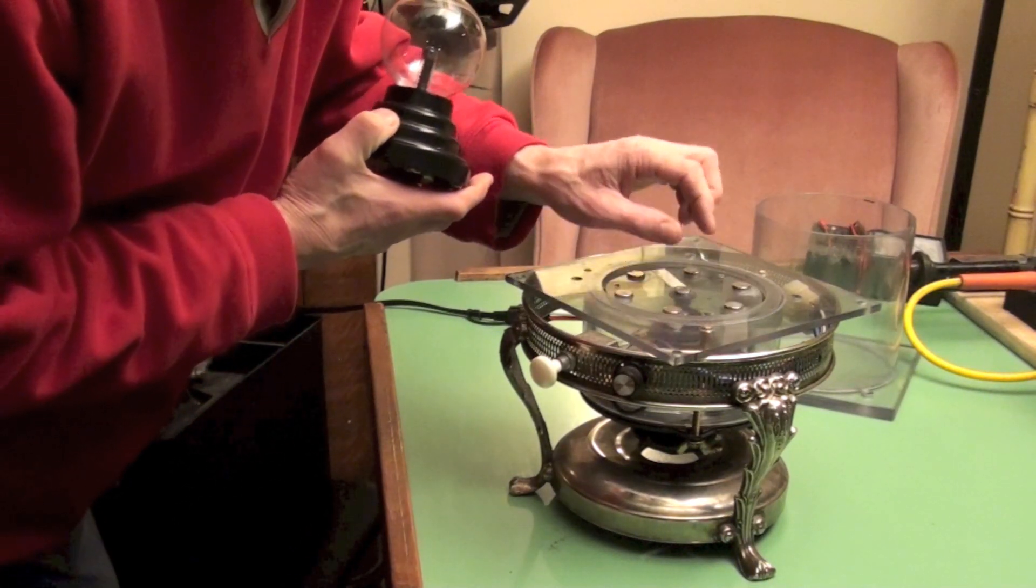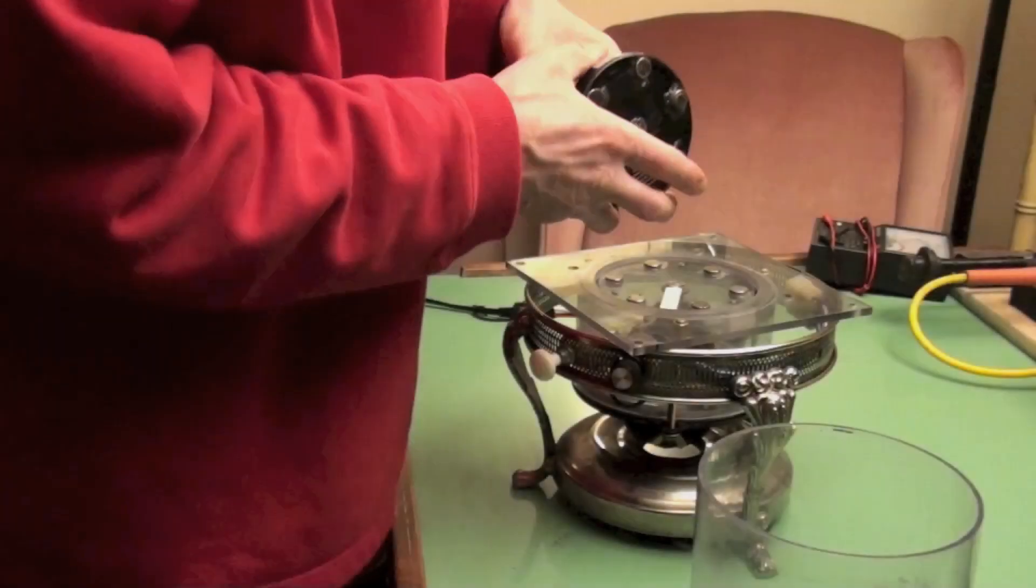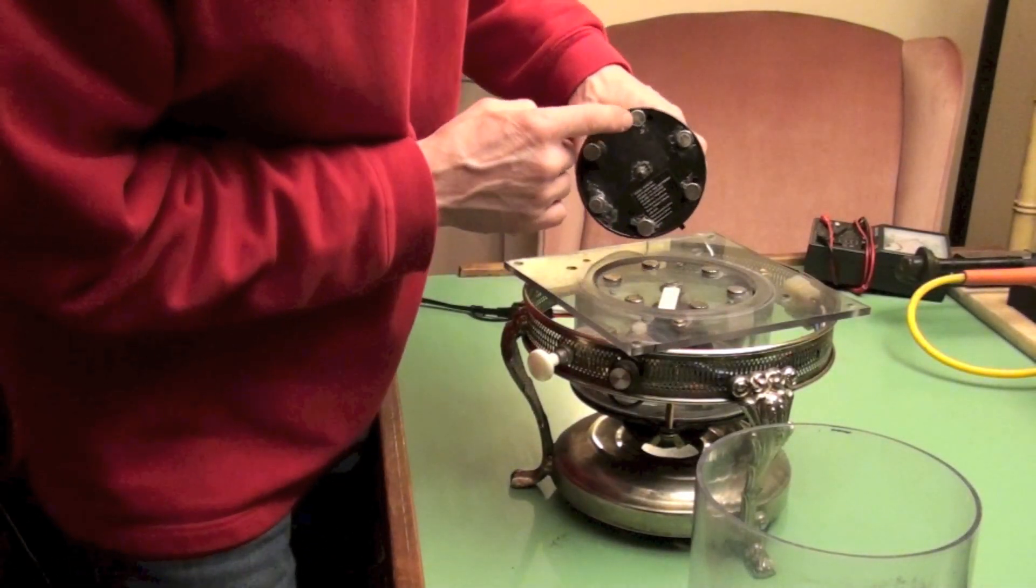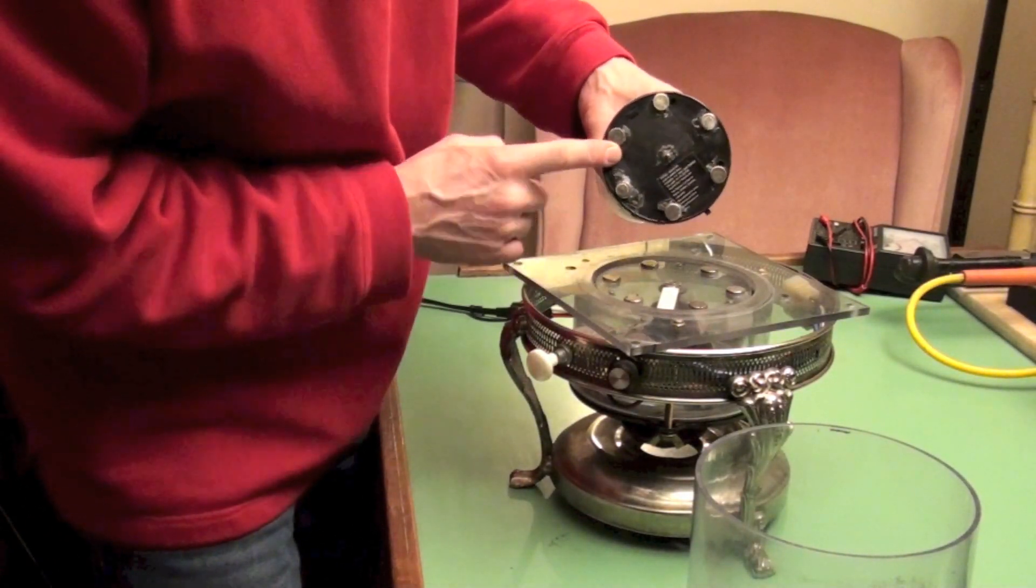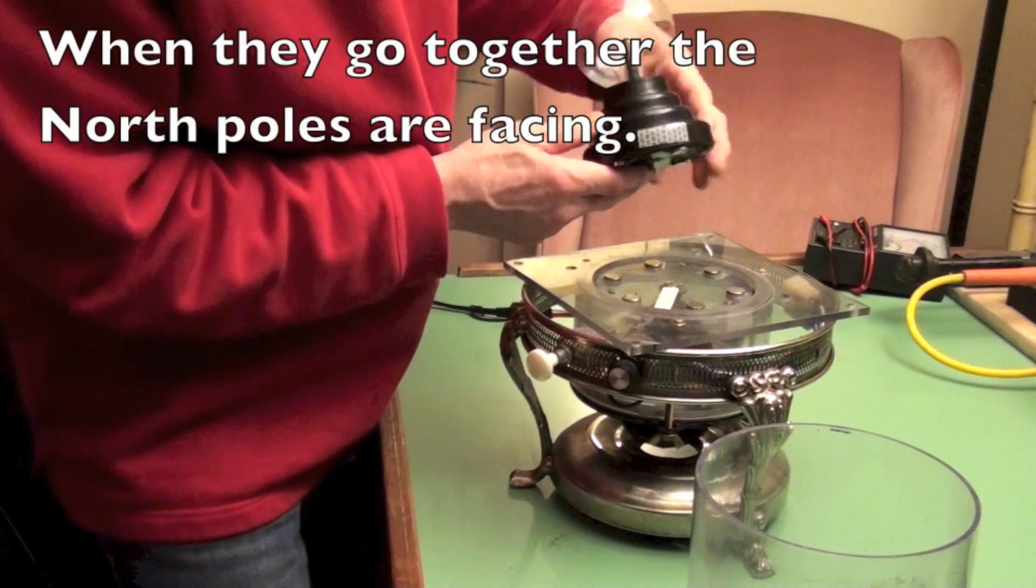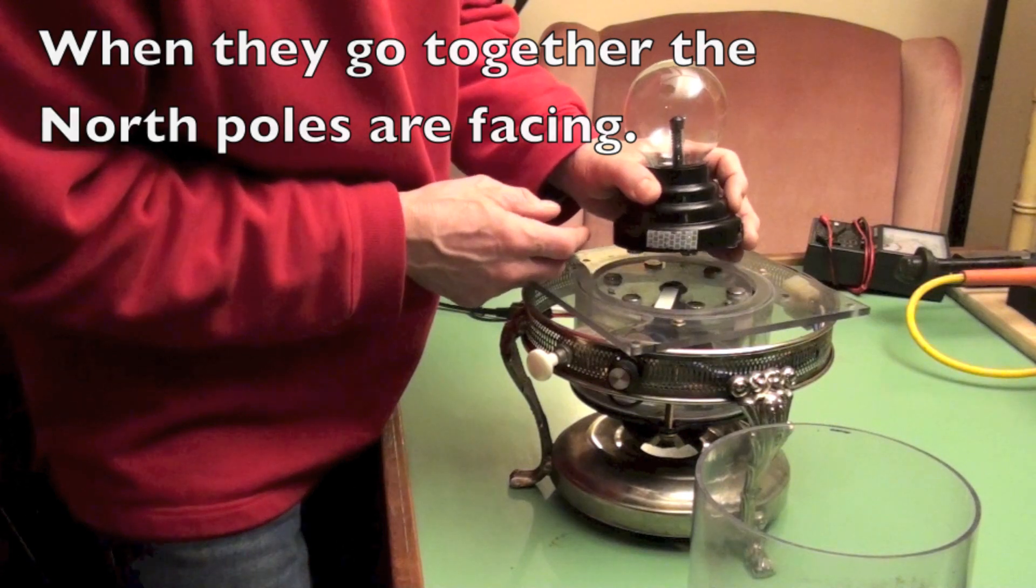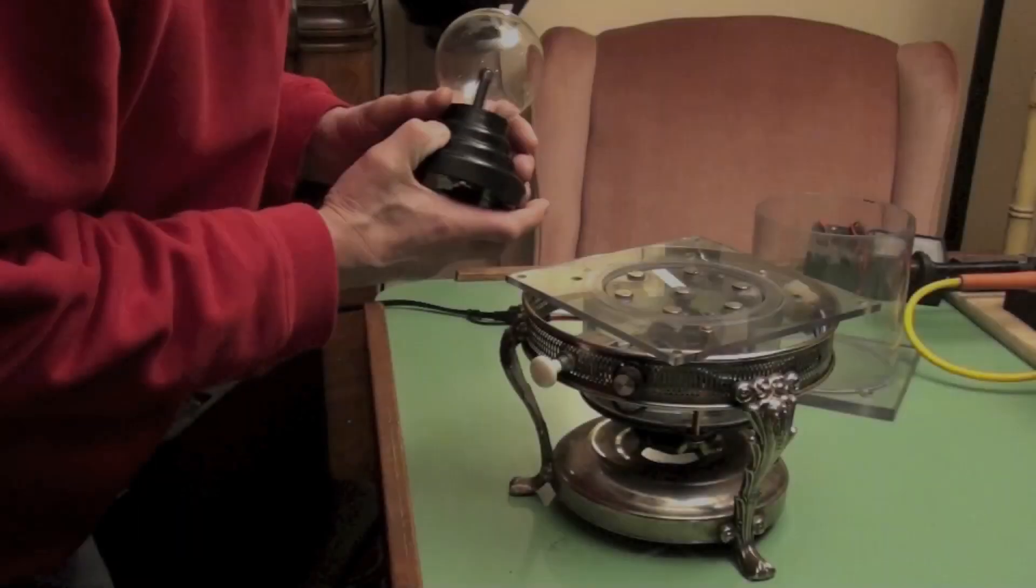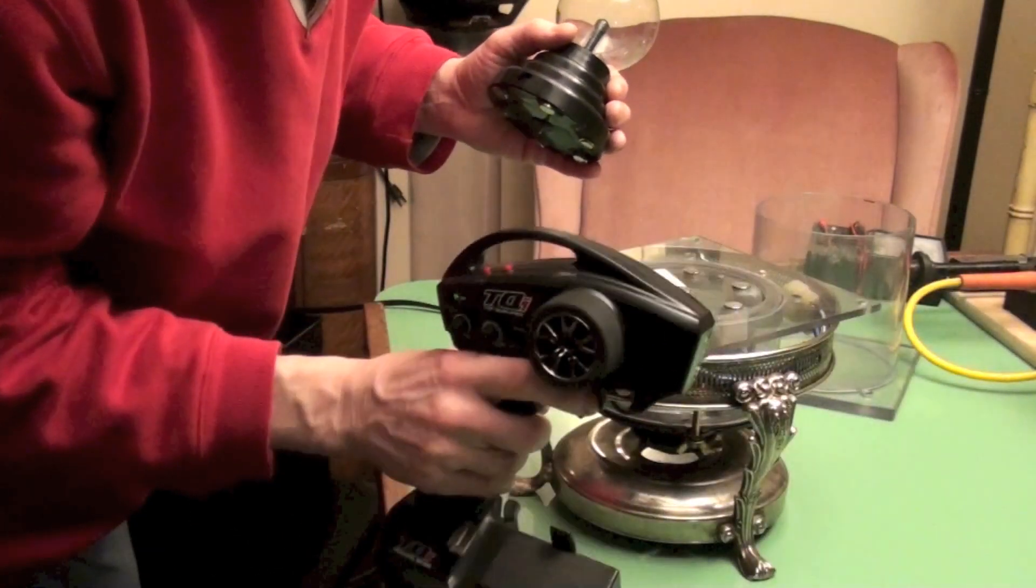Inside this contraption, these six magnets are all north up. These six magnets are also north up, and when they go together they're in repelling mode. It's all controlled by a remote control.